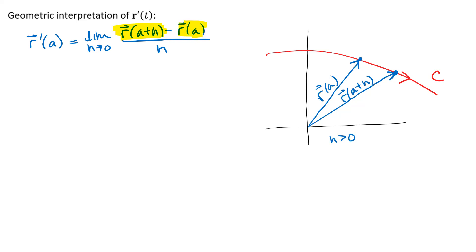When I think about subtracting those two vectors, one way to do that geometrically is to put them tail to tail and draw a vector that goes between their terminal points. This vector I drew here represents r(a + h) minus r(a). You can also think of it as taking r(a + h) and adding r(a) in the negative direction — you'd get the same vector whether drawn from the origin or between those two terminal points.